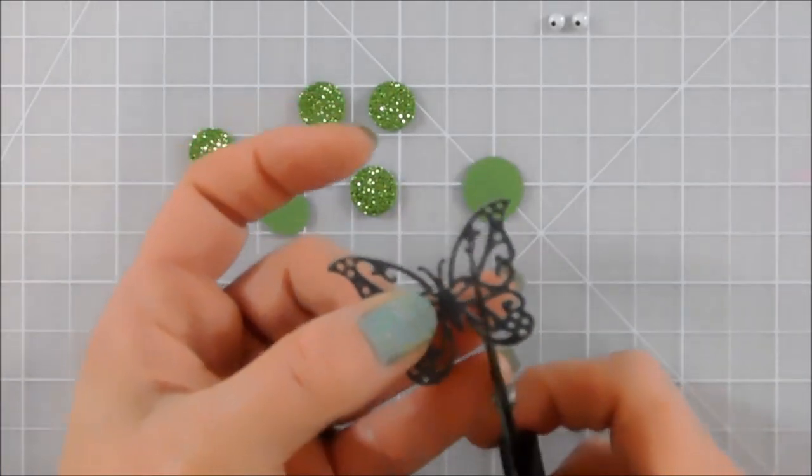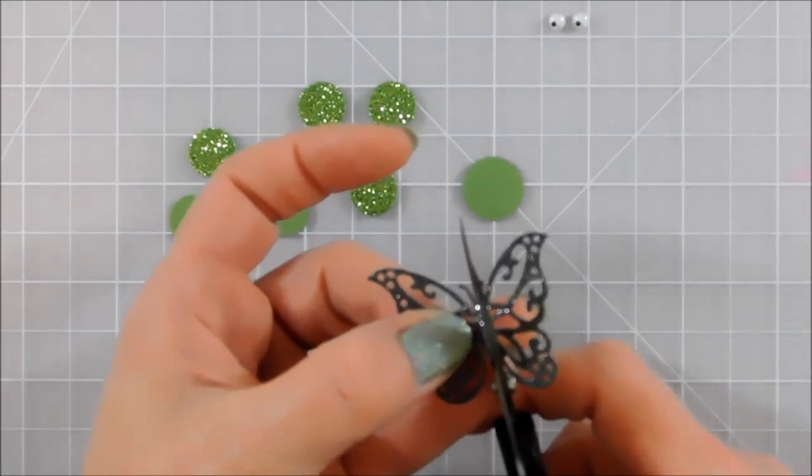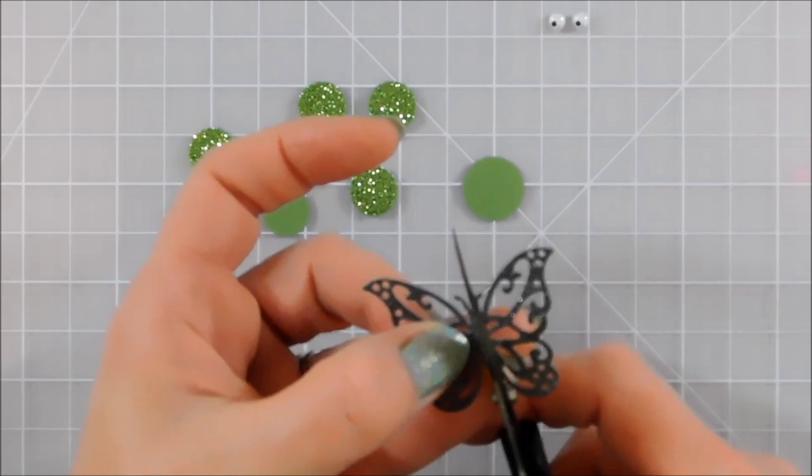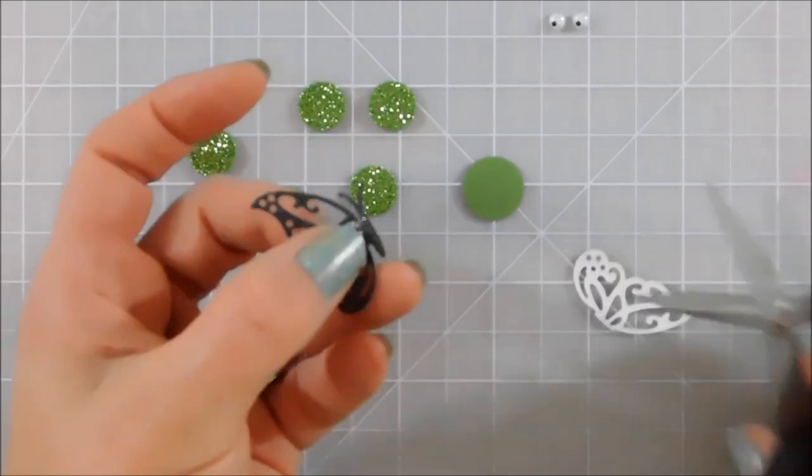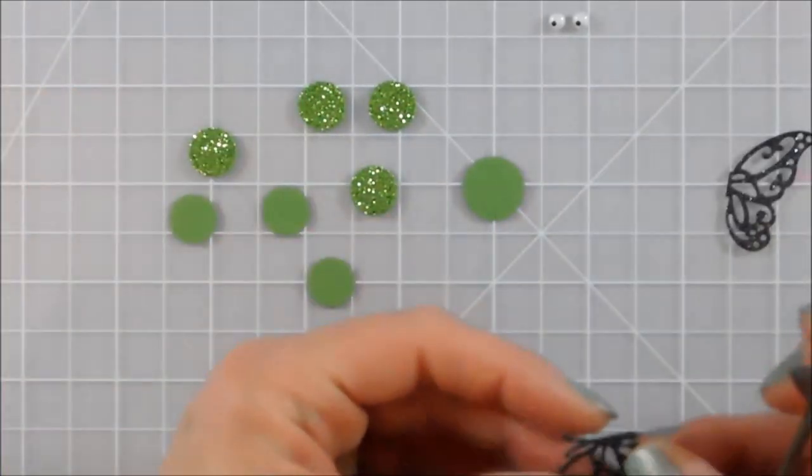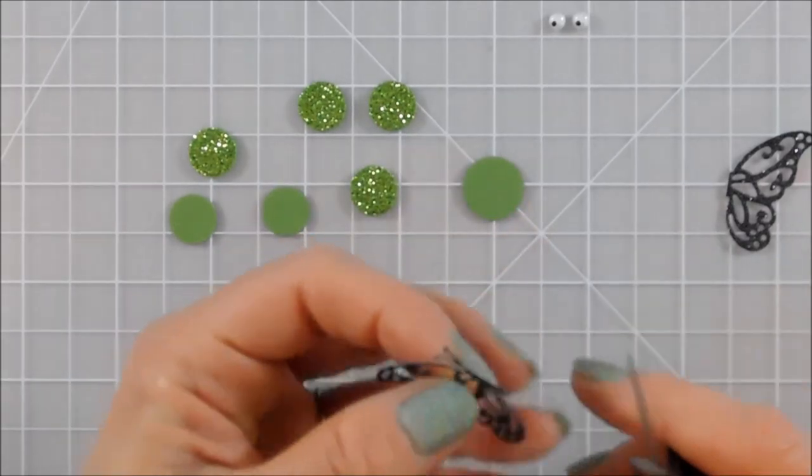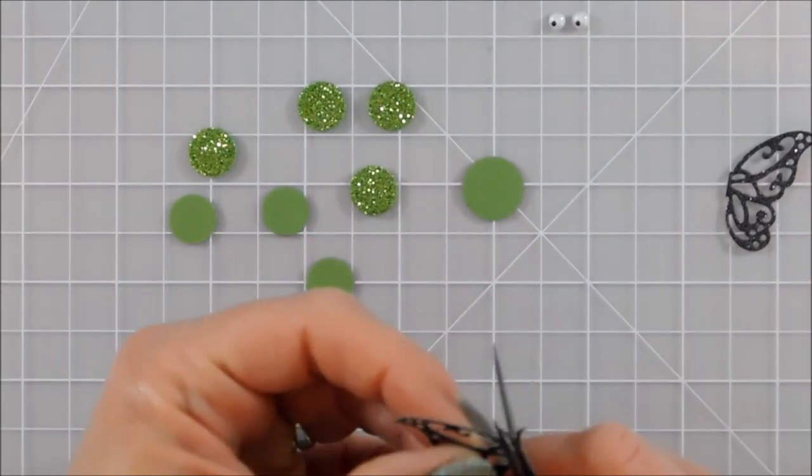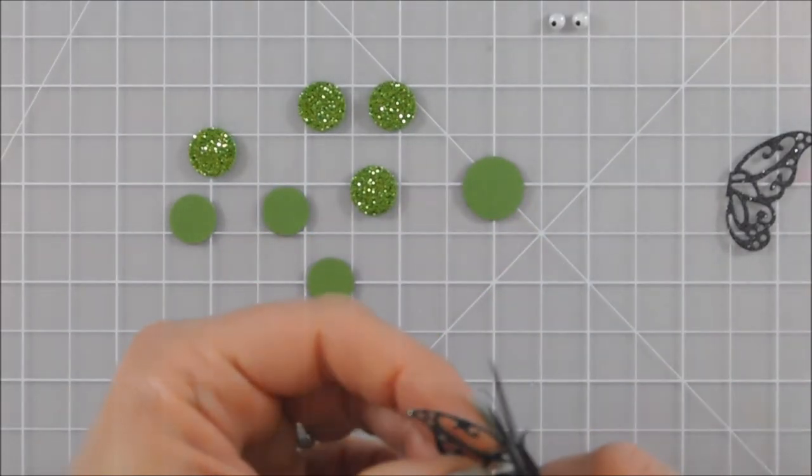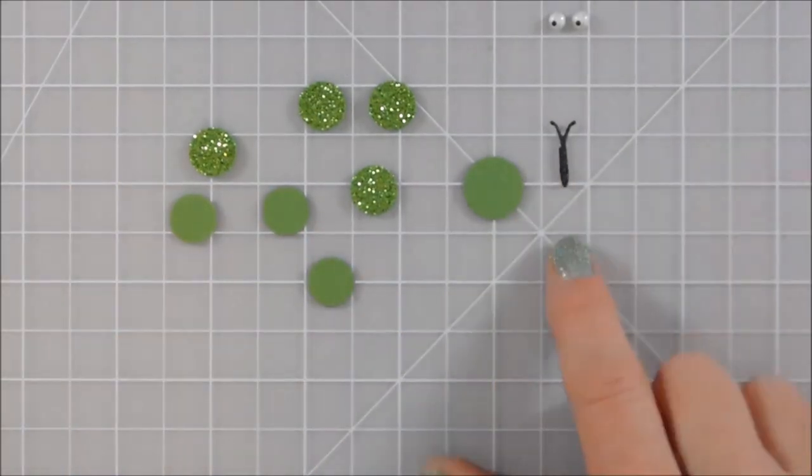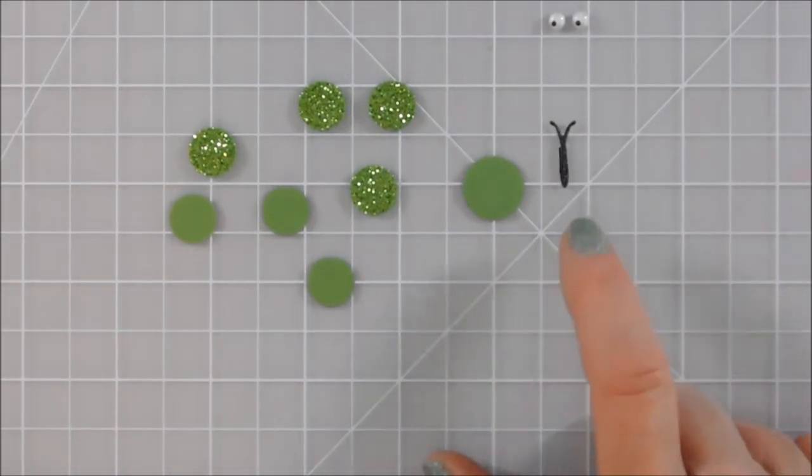So now I'm going to cut the body segment out of my butterfly here and I'm being careful to save those wings because I may want to use those on another project. That just leaves the body of the butterfly there that's going to be the antenna of our caterpillar.